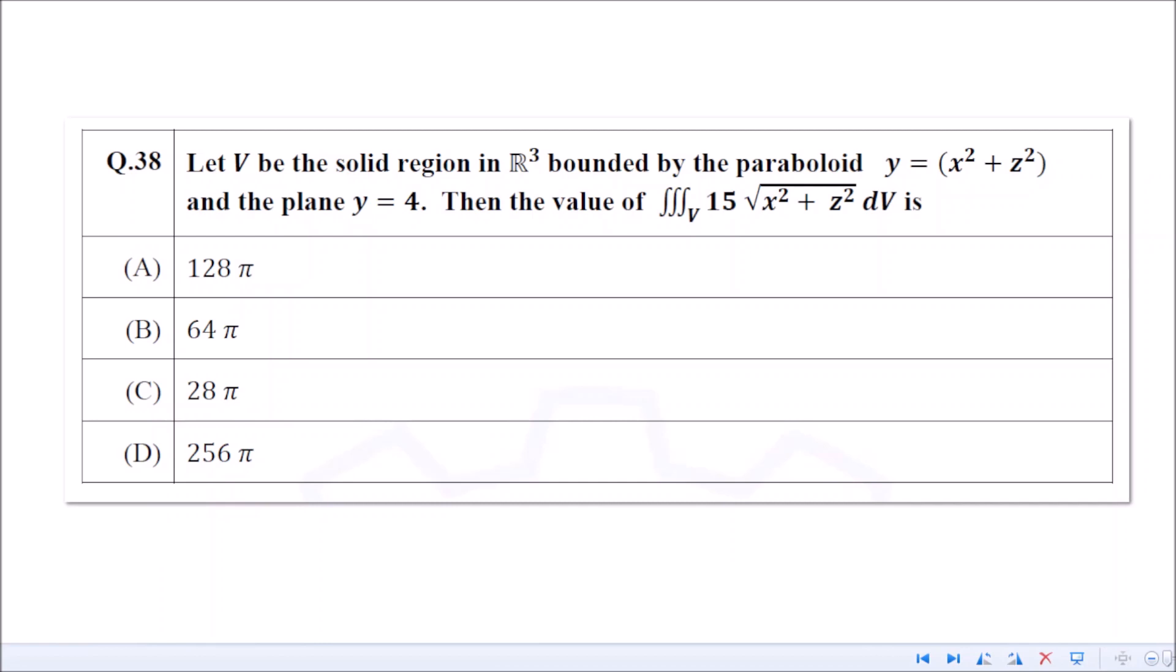What is V? V is some region in R³ bounded by the paraboloid y = x² + z² and the plane y = 4. Now when you have triple integration in the picture, you think of three ways.